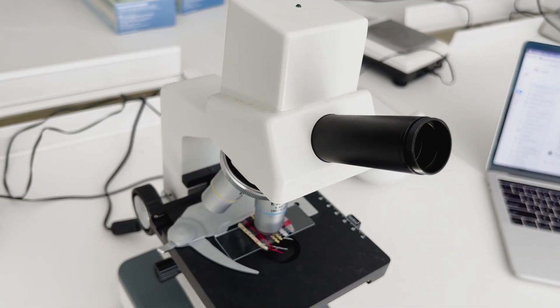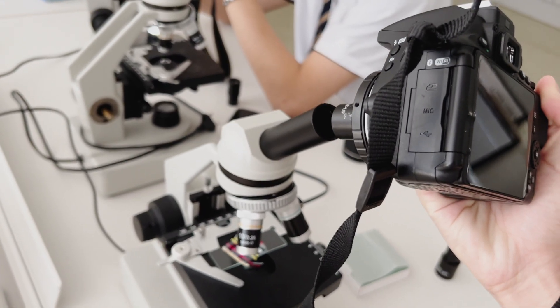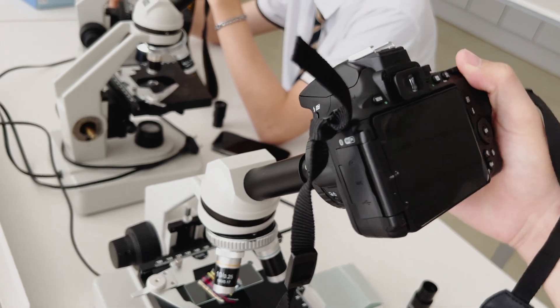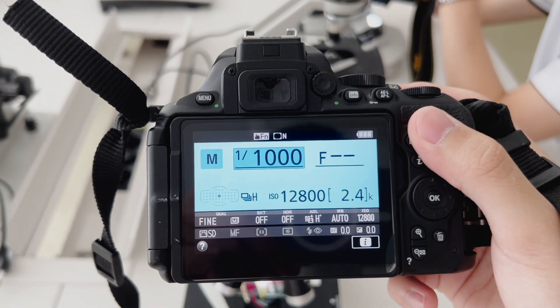Next, remove the microscope's default eyepiece and fit the camera's adapter neatly into the microscope. Set the camera to manual mode and photograph the magnified image of the microscope.